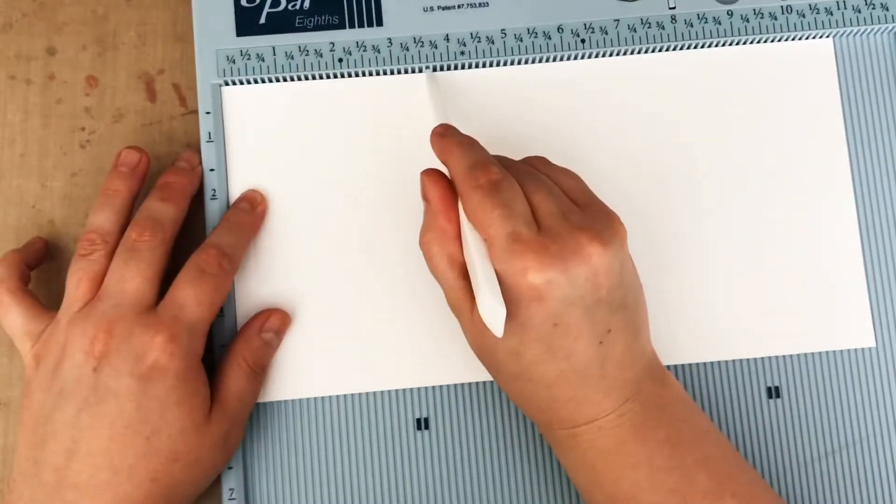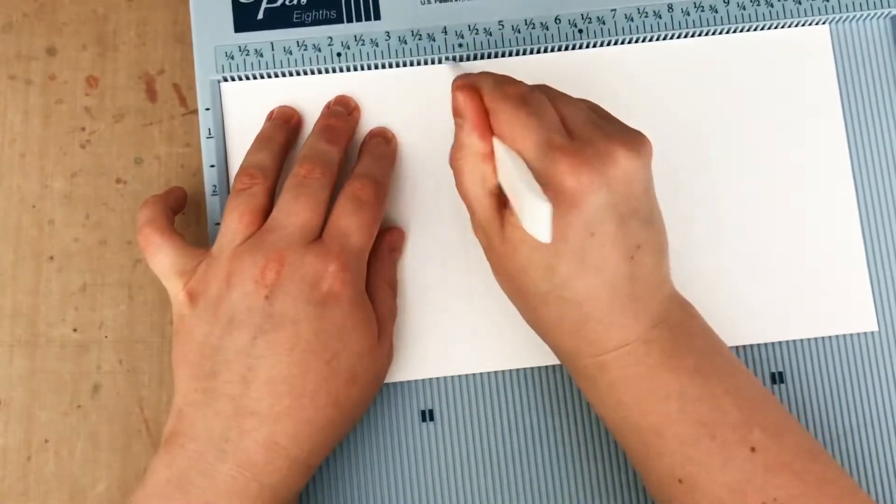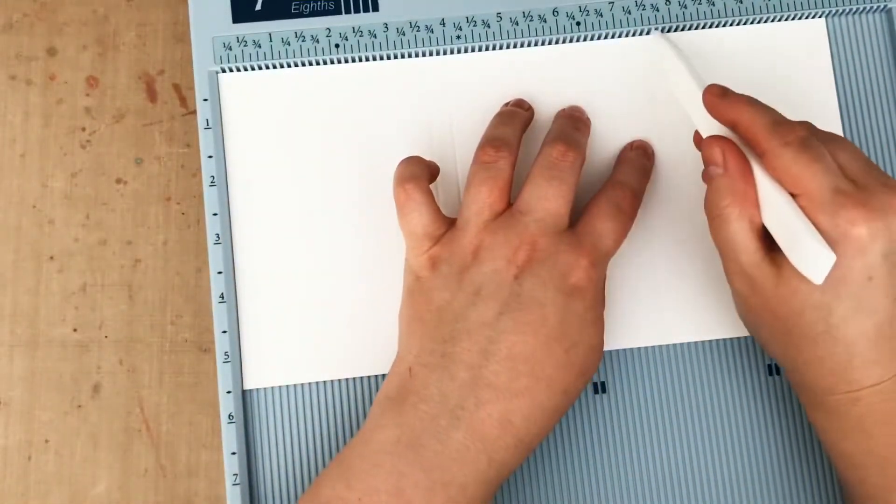Then I'm going to score at 3/8, 3 5/8, 4 7/8, 7 1/4, and 7 5/8. And if that was too fast to remember, don't worry, I'll put those measurements on my blog as well.